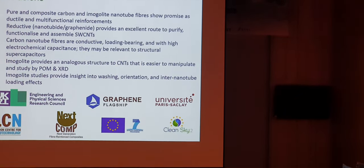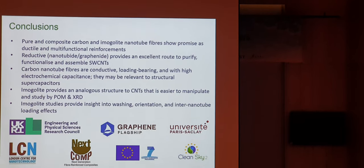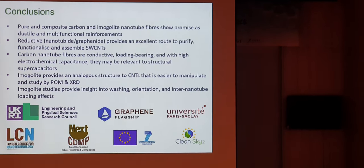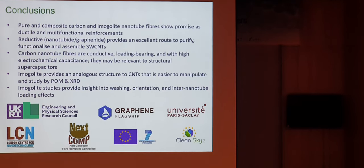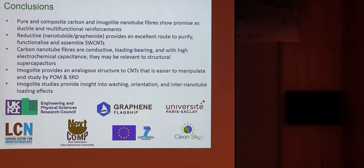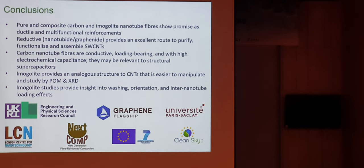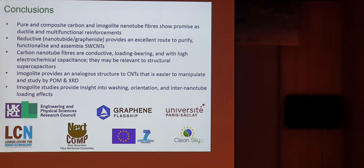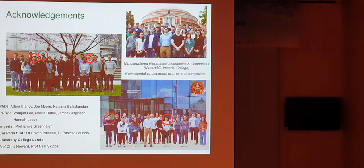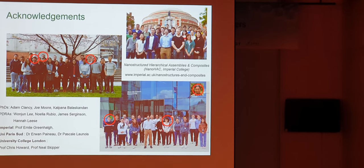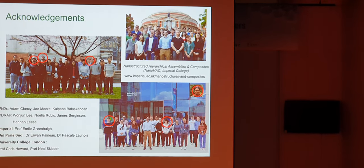So that's all I was going to talk about today. I've shown you pure and composite imogolite and carbon nanotube fibers for both some structural performance and some multifunctional behavior in both supercaps and in self-healing fibers. I hope you think that reductive nanotubite chemistry is an interesting way maybe to spin fibers that might be complementary to the acid spinning. You can get conductive fibers, they have low density, good electrochemical capacitance, and this imogolite system I think is very interesting for in-situ studies and it might be very interesting to do in-situ x-ray studies as well in the future and understand what's going on. Thanks to the various funding bodies and of course the people who did the work, and also Joan and Kalpana who actually did most of the work I showed you today. Thanks very much.